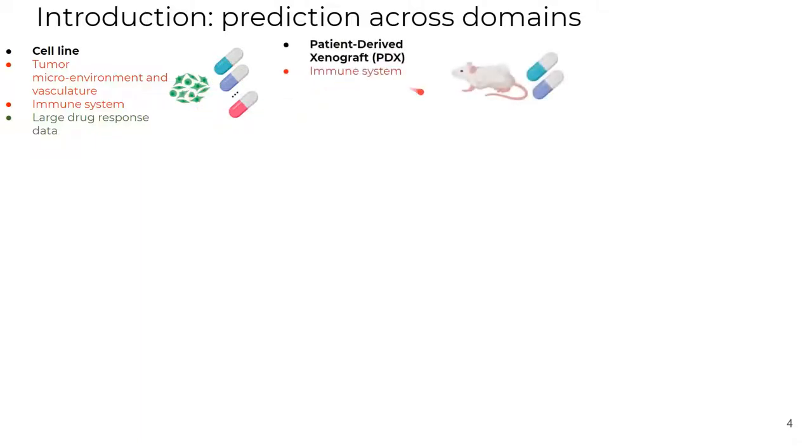If you use patient-derived xenograft PDX data, still, when compared to a patient, these models are lacking immune system. If you want a machine learning model with precision oncology utility, patient data would be the source. However, we have limited labeled patient data. Still, we have a large number of unlabeled patient samples from TCGA that could be used.